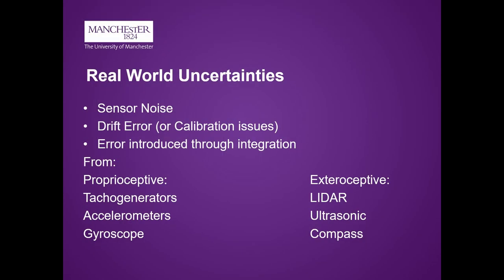These randomly generated deviations in measurements are to simulate real-world uncertainties, like error in proprioceptive and exteroceptive sensors, such as tachogenerators, accelerometers or gyroscopes, which will each present their own uncertainties in measurements alongside possible drift error.